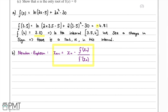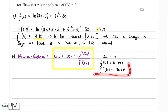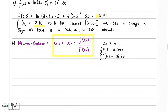We're given that xₙ = 4 as our starting point, f(4) = 3.099, and f'(4) = 16.67. Substituting these values into the formula gives xₙ₊₁ = 4 - 3.099 / 16.67.